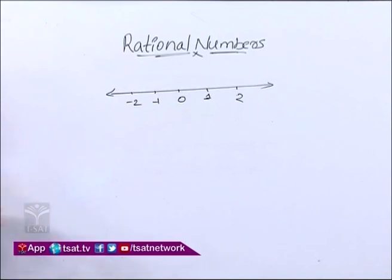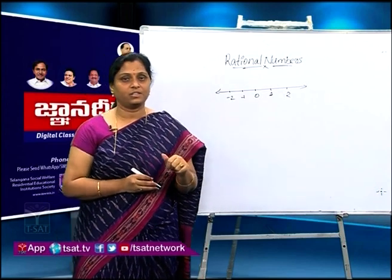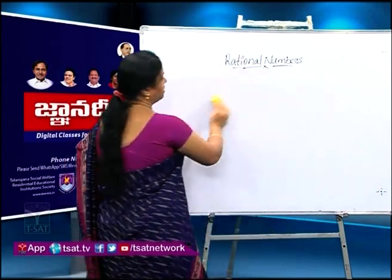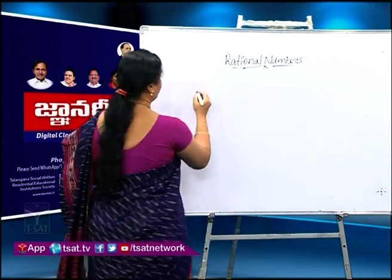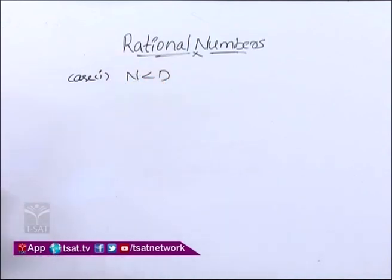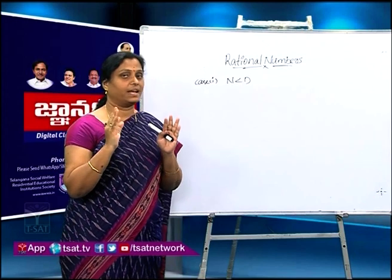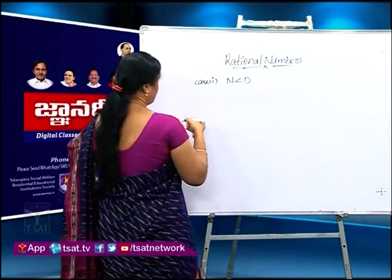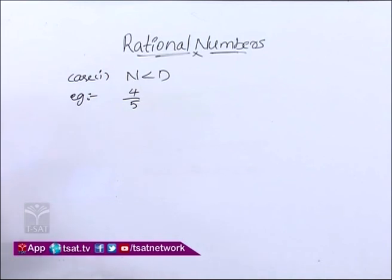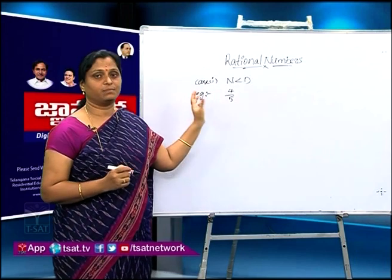Now we are going to learn about representing rational numbers on the number line. There are two cases. Case 1 is a proper fraction, and Case 2 is an improper fraction. A proper fraction is when the numerator is less than the denominator. Case 1: numerator is less than denominator — we say this is a proper fraction. Every proper fraction lies between 0 and 1. We go with an example: I am taking 4/5. Since 4 is less than 5, 4/5 is a proper fraction, and it lies between 0 and 1.